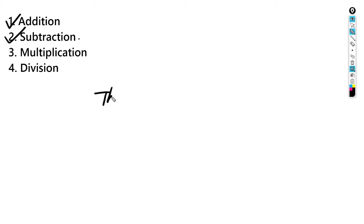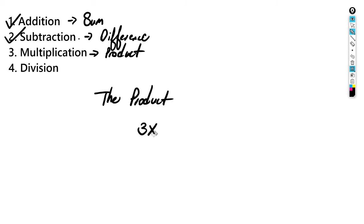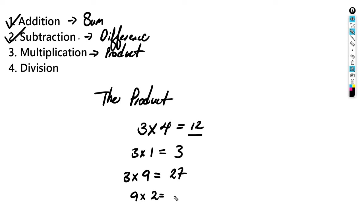When you're multiplying numbers you find the product. Remember: with addition you find the sum, with subtraction you find the difference, and with multiplication you find the product. Three multiplied by four gives us the product, which is twelve. Let's do some more: three multiplied by one is three, three multiplied by nine is twenty-seven, and nine multiplied by two is eighteen.